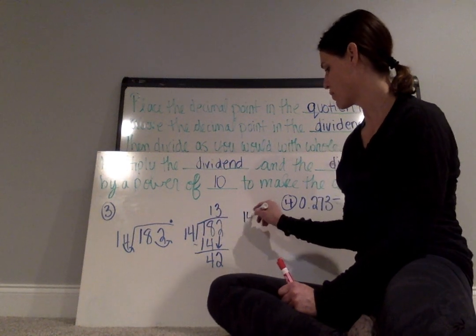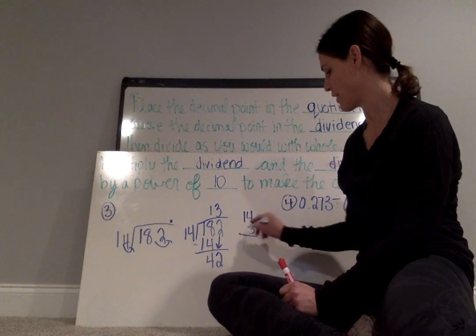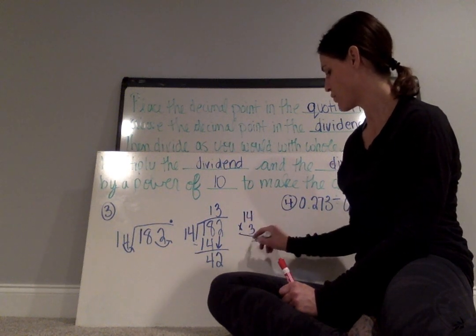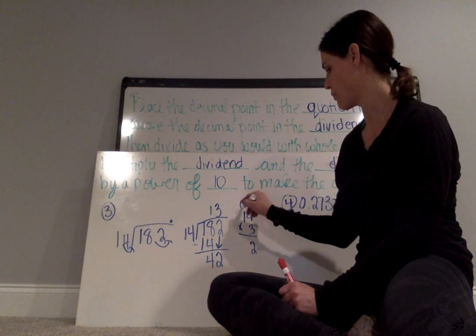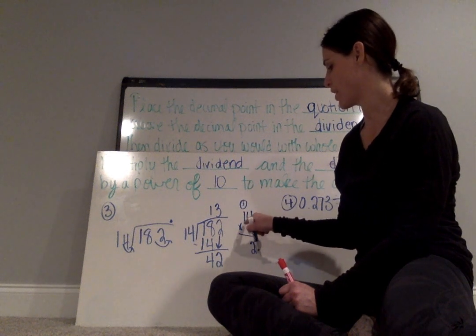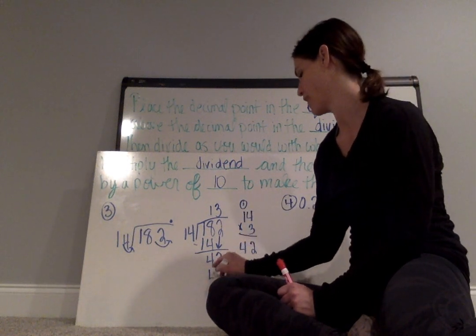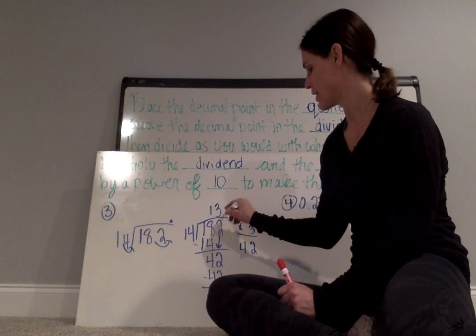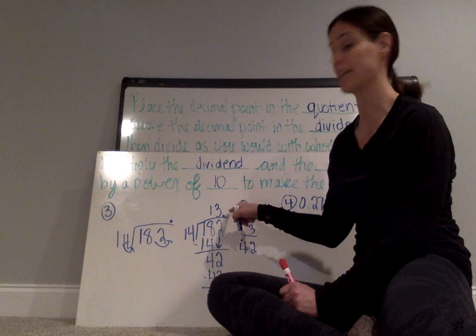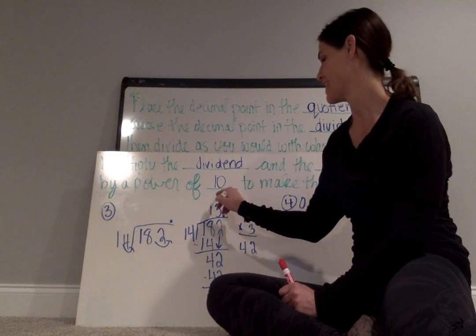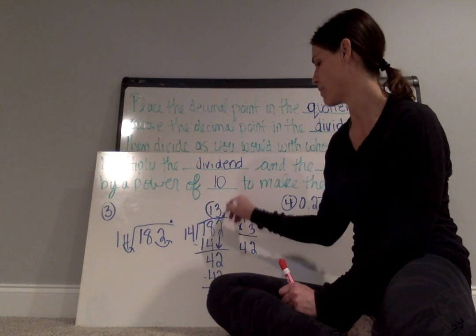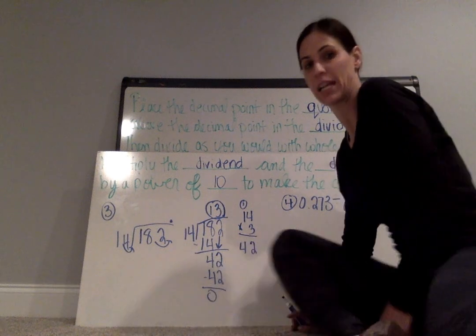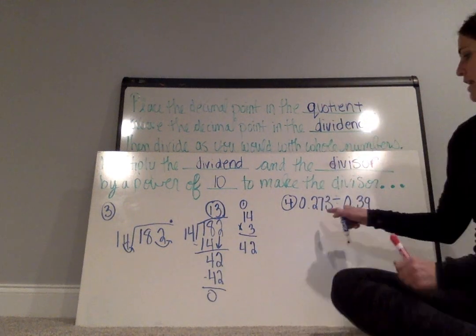So 3 times 14, you need to write it out. 3 times 4 is 12. I carry my 1. 3 times 1 is 3, plus 1 is 4. So that is 42. I have a remainder of 0. And since my decimal point is to the right of the 3, it's not necessary for me to include it because it's just a whole number of 13.